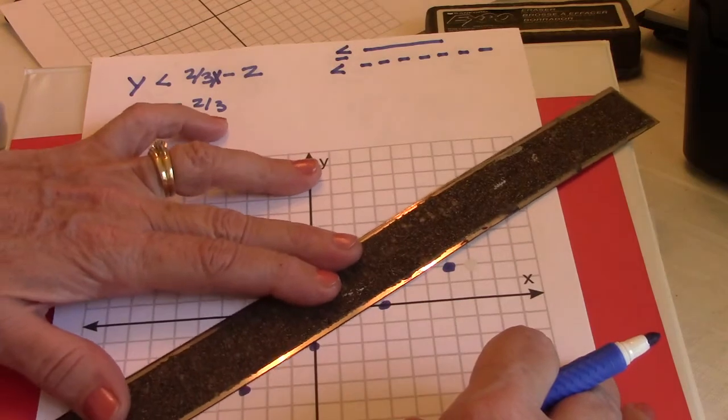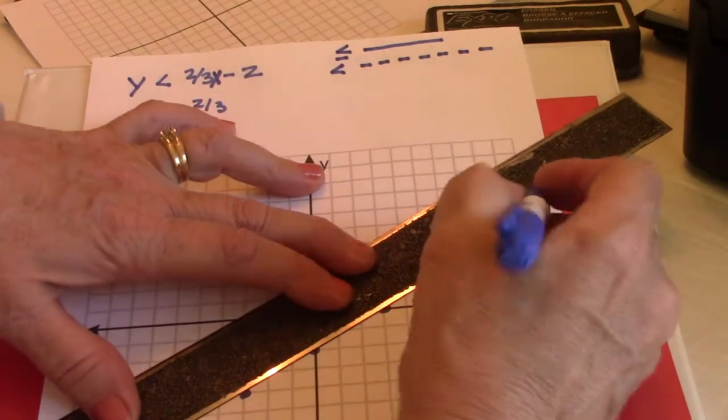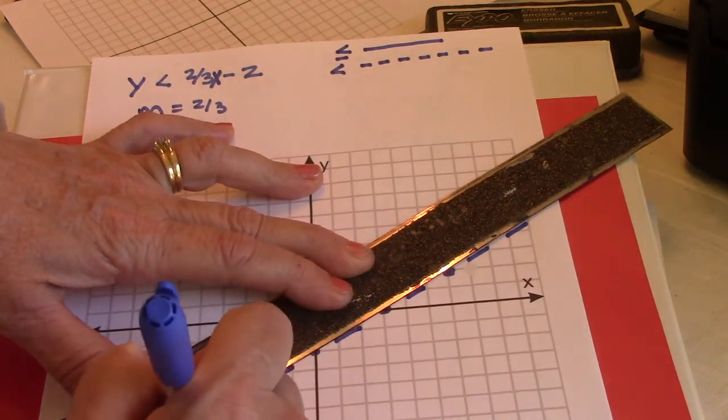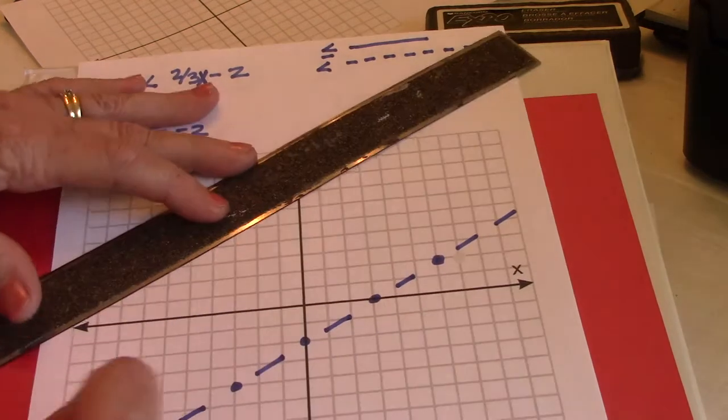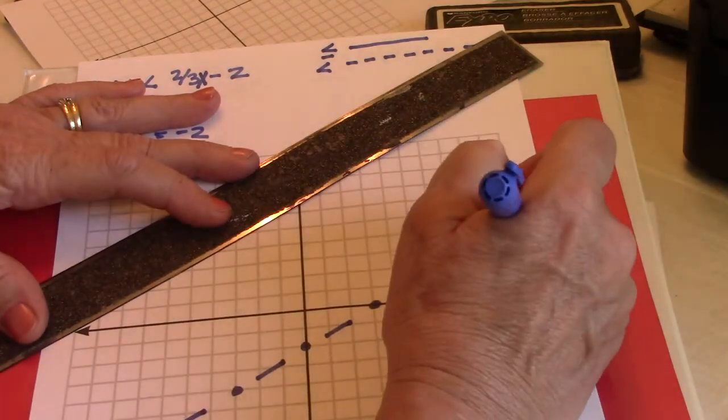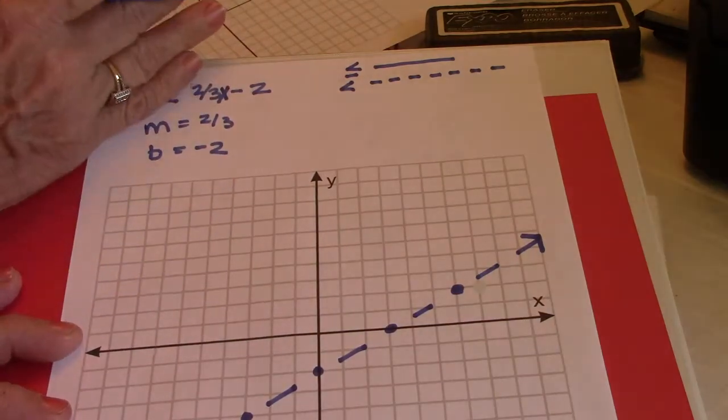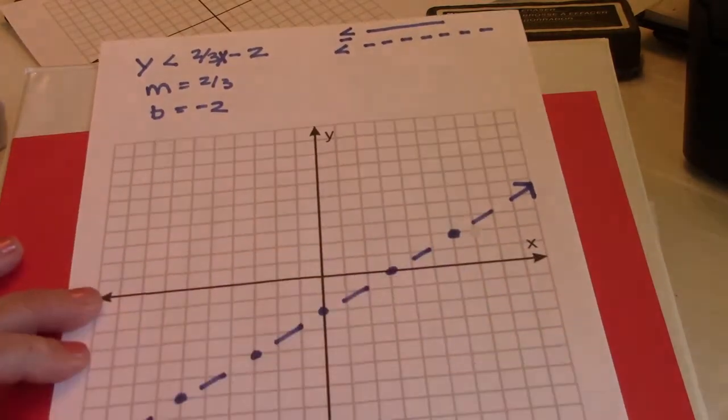Okay, but anything either above or below will be shaded and we'll figure out where we're going to shade in a minute. So we have a dashed line.